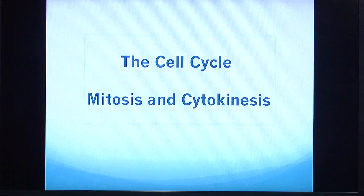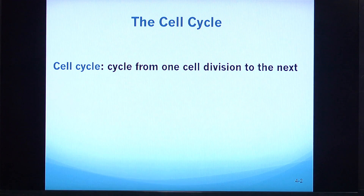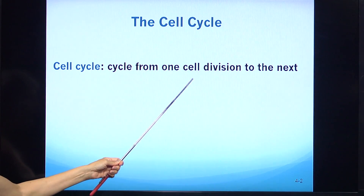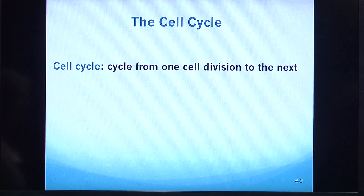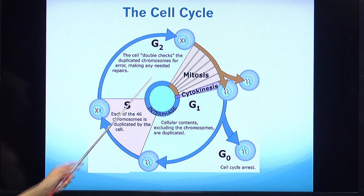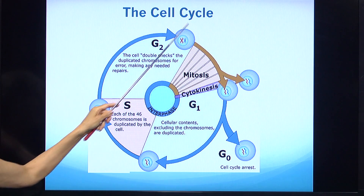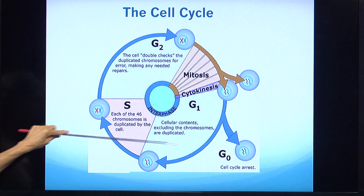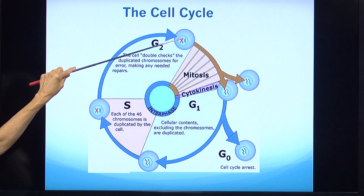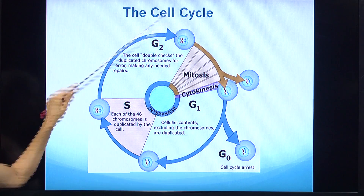Welcome once again as we discuss some topics on anatomy and physiology. Today we are going to discuss the cell cycle, mitosis, and cytokinesis. The cell cycle is the cycle from one cell division to the next. This cell has just divided into two new cells, and there will be a cycle where this cell goes through some phases until it is ready to divide once again.